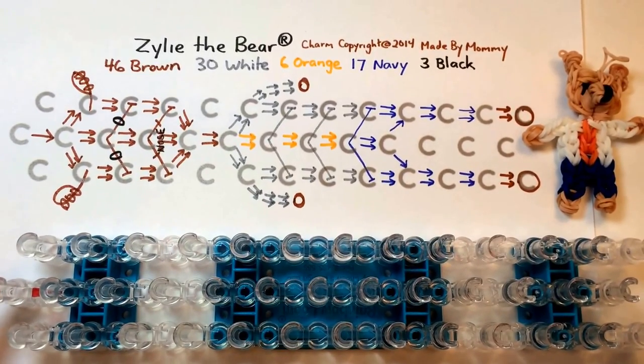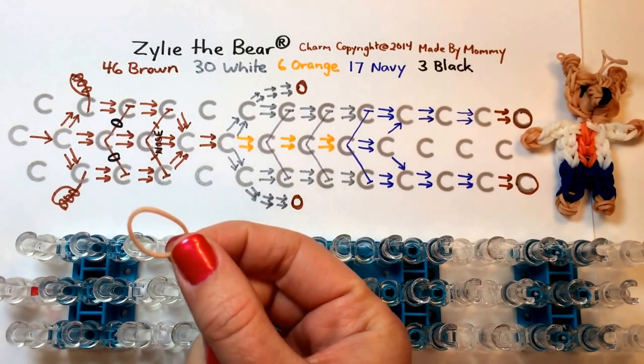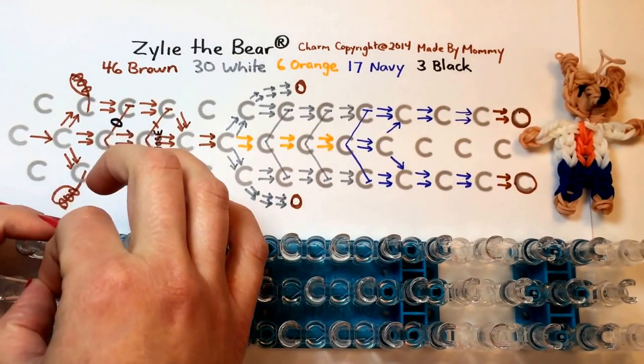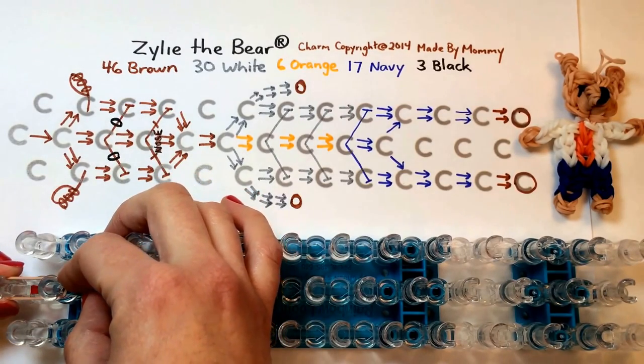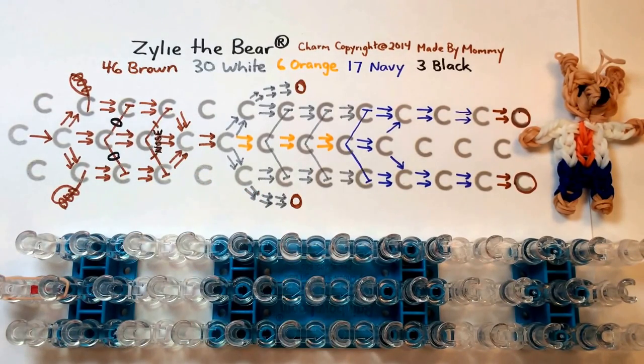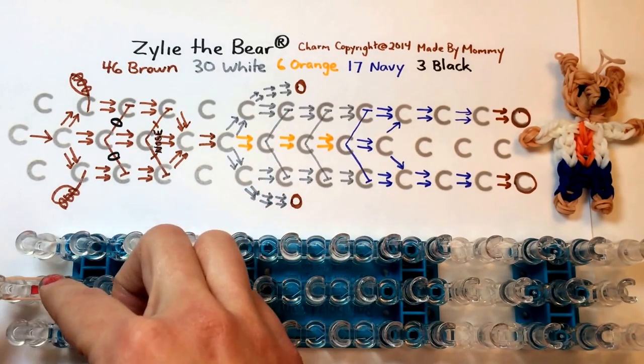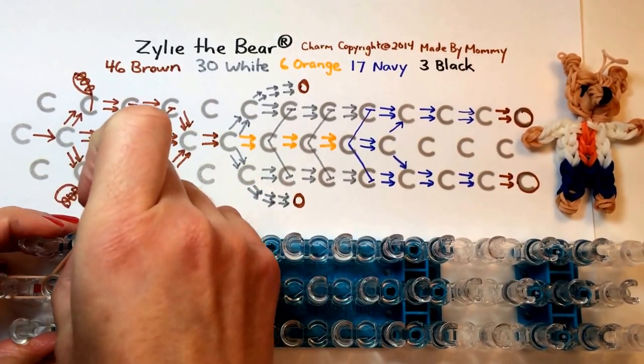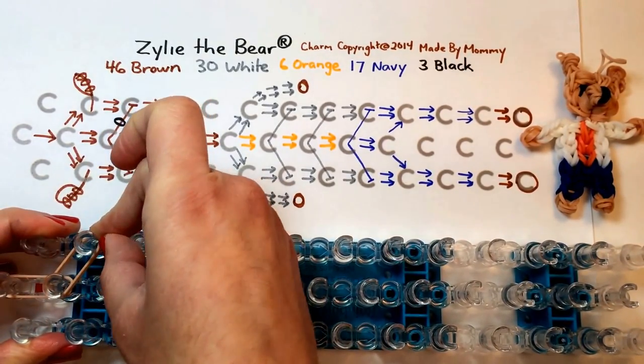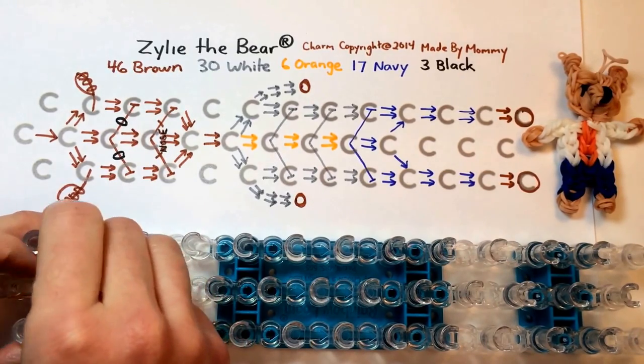I'm going to start with a single brown. This brown that I'm using is from rainbowloom.com. They have a new package called Mixed Skin Tones. This is one of the middle tones from that packet of four colors. So one on that first peg, and now two at a time.